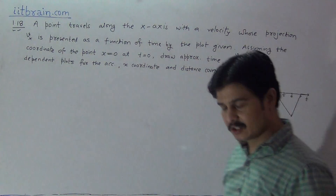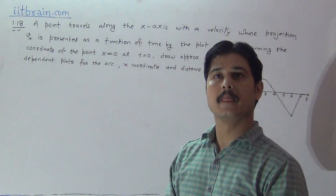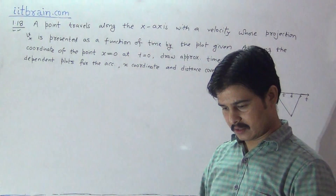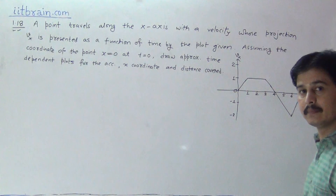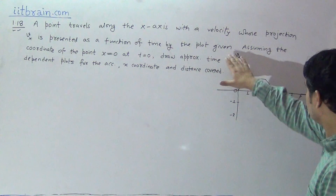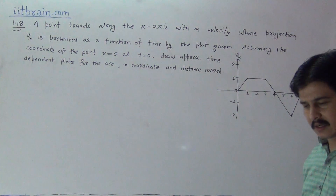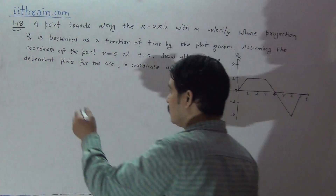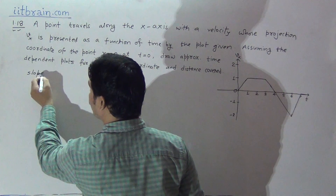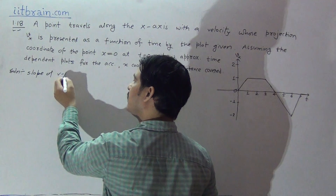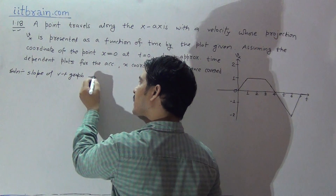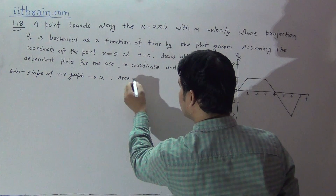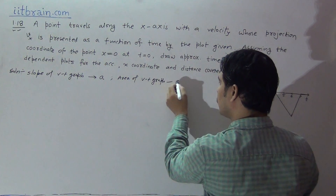First of all, understand clearly: in our graphical kinematics section, we have a detailed discussion about how to plot acceleration-time, velocity-time, and displacement-time graphs. This is a vt graph; a particle is moving along the x-axis, so it is the case of rectilinear motion. The slope of the vt graph provides acceleration, and the area of the vt graph gives displacement.